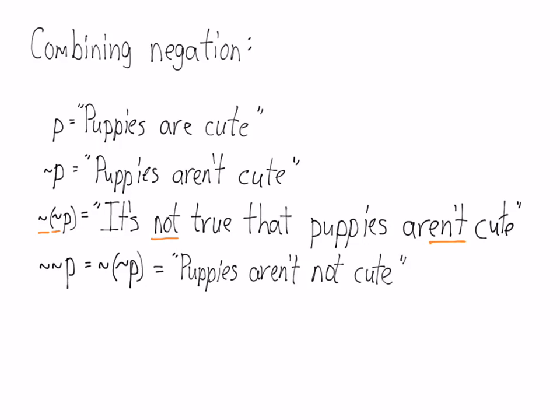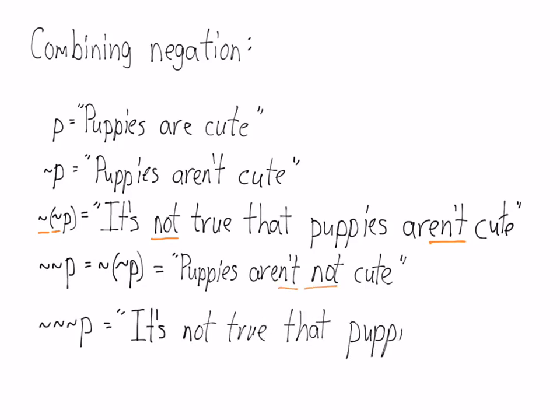A double negation of P would mean 'puppies aren't not cute.' A triple negation would be similar with an additional denial: 'it's not true that puppies aren't not cute.'